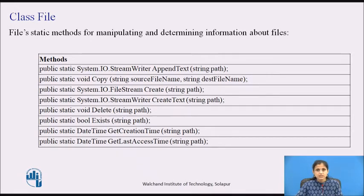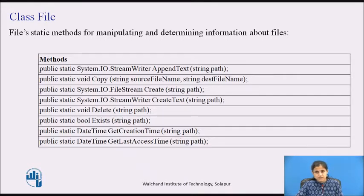Here we will see commonly used methods of the file class. The first method is AppendText. It accepts a path. If the file specified by path does not exist, it is created. If the file does exist, it creates a StreamWriter that appends UTF-8 encoded text to an existing file and returns it.